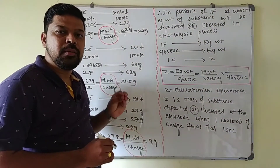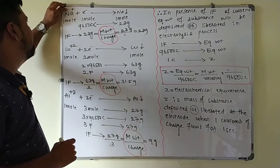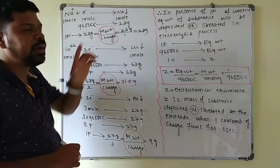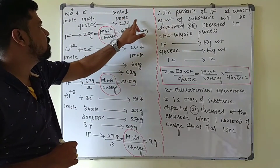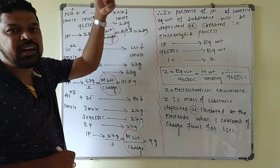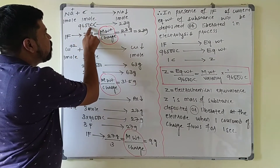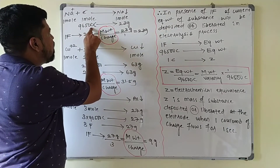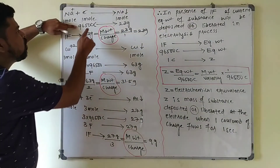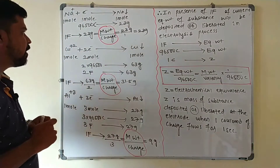Each one mole of Na⁺ ions gains one mole of electrons, so one mole of sodium is deposited at the cathode. One mole of sodium is 23 grams. So if one mole of electrons is passed — that is 96,500 coulombs — 23 grams of sodium is deposited. Therefore, one Faraday of current deposits 23 grams of sodium, which is the equivalent weight of sodium (atomic mass 23 / charge 1 = 23 grams).